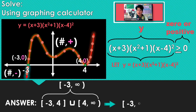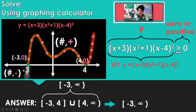Looking at that graph: if you substitute negative 3 into the function, or any number to the right of negative 3, those x-values are going to generate y-coordinates that are positive or 0. So, negative 3 through infinity.